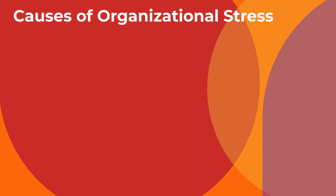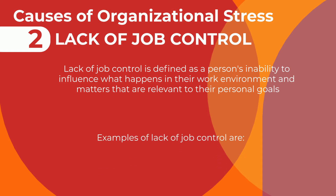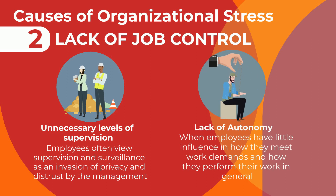Another cause of organisational stress is lack of job control. Lack of job control is defined as a person's inability to influence what happens in their work environment and matters that are relevant to their personal goals. Examples of lack of job control include unnecessary levels of supervision. Employees often view supervision and surveillance as an invasion of privacy and distrust by the management. The next example is lack of autonomy. This is when employees have little influence in how they meet their work demands and how they perform their work in general.